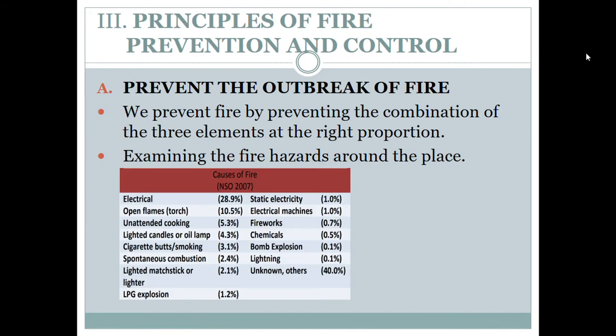The principles of fire prevention and control: first, we can prevent the outbreak of a fire by preventing the combination of the three elements. The most difficult element to control is oxygen, since it is in the air and is a necessity for life. We can deal with the other two — fuel and heat — by simply separating them from combining.